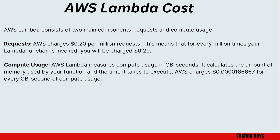For compute usage, AWS Lambda measures compute usage in GB-seconds. It calculates the amount of memory used by your function and the time it takes to execute. AWS charges $0.0000166667 for every GB-second of compute usage.